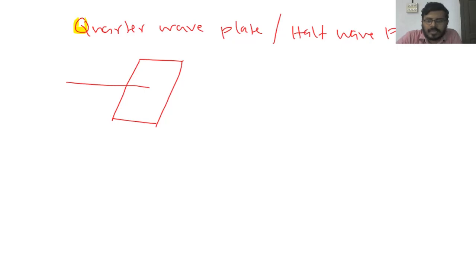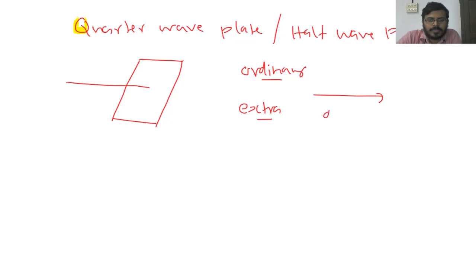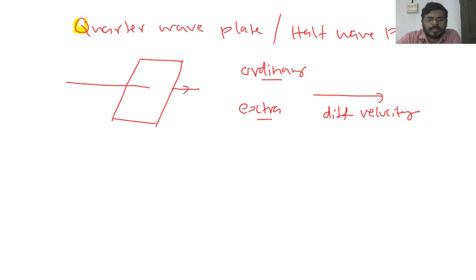On entering the crystal, the light splits up into an ordinary ray and an extraordinary ray. This ordinary ray and extraordinary ray travel along the same direction but with different velocities. On emergence from the crystal, there will be a path difference between the ordinary ray and the extraordinary ray.